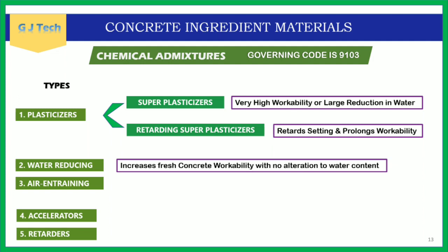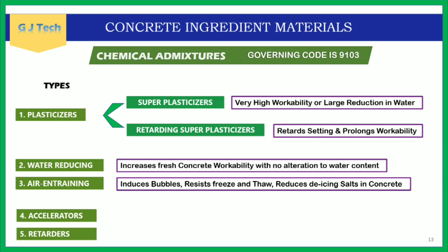Water-reducing admixtures are used where a fixed water-cement ratio must be maintained while needing an increase in workability. Air-entraining admixtures are used extensively for air-entrained concretes — important for durability in mass concrete. They induce air bubbles through chemical reaction, increasing plasticity of concrete. These air bubbles later provide additional resistance to freeze-thaw cycles and also reduce the effect of de-icing salts in concrete.